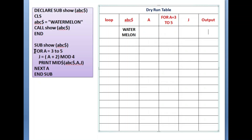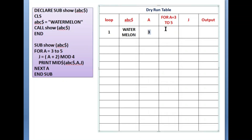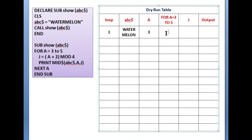Let's start the loop. FOR a = 3, so the starting value of a is three. The loop runs from three to five — is the condition true or false? The value of a is three, so the condition is true.